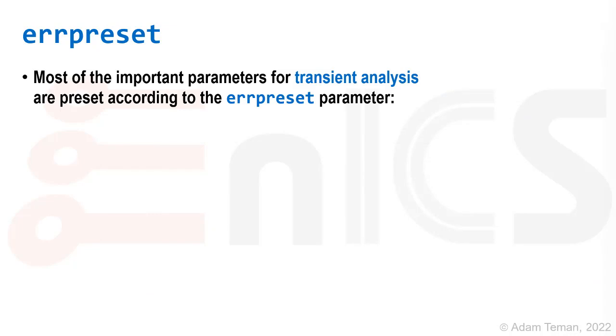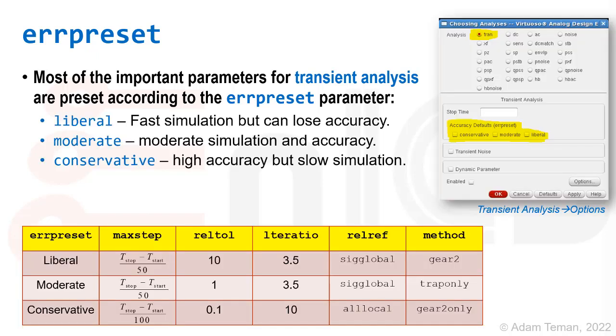Error preset is one of the important parameters for transient analysis. It helps us trade off between accuracy and speed, and can help us if we get those types of strange oscillations to try something else. When we look into our transient analysis form on ADE, we have this accuracy defaults, which are conservative, moderate, and liberal. If you ever paid attention, it says this is the error preset type of parameter. We have options that are liberal, moderate, and conservative, and they're really trading off our accuracy versus our speed.